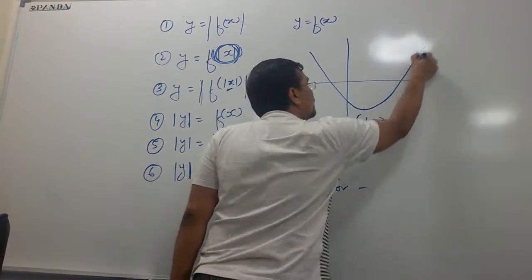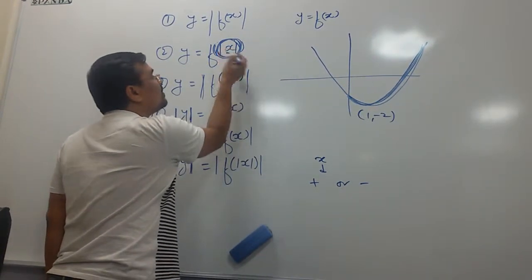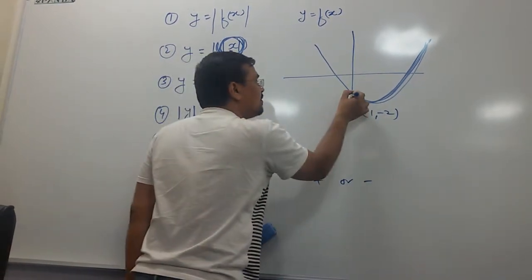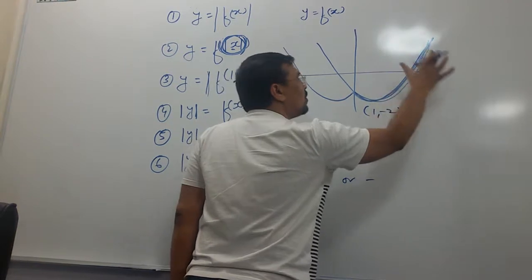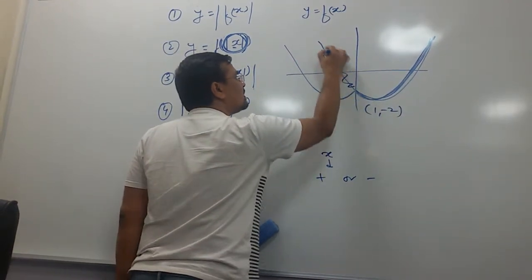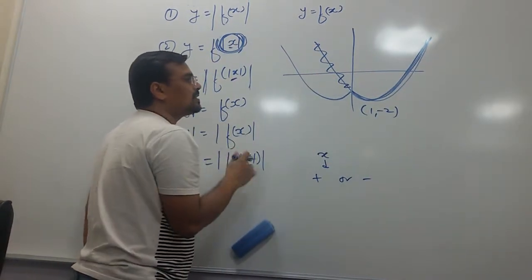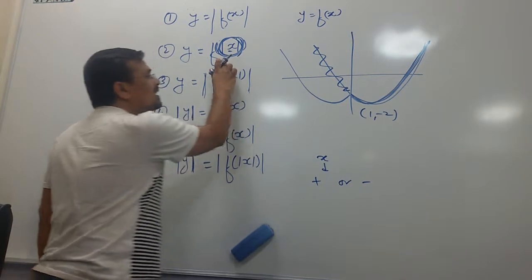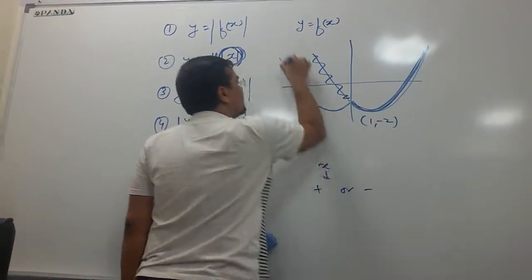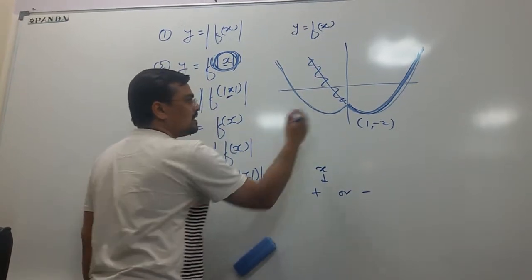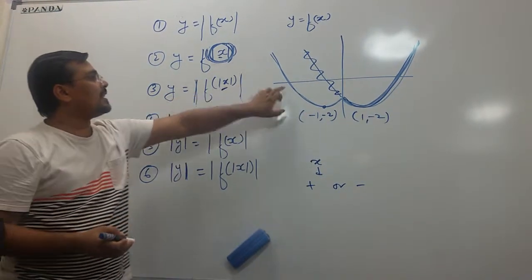My function would always follow the positive x values. This is the part where x is positive. Even for negative x, my function would follow the positive x values, meaning the y value would be the same for positive x or for negative x. So graphically, this function is symmetric about the y-axis. The final graph includes the mirror image along the y-axis, and this point would become minus 1, minus 2.